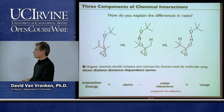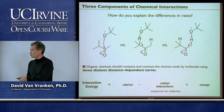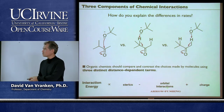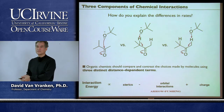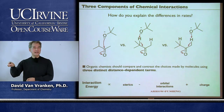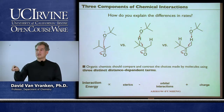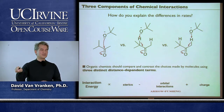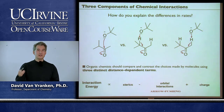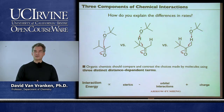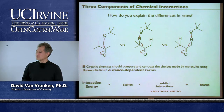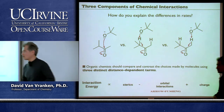Orbital interactions are really a representation of arrow pushing. If we break down our reaction mechanisms into individual elementary reaction steps—where each step has a single transition state—then we can equate arrow pushing with the interaction of filled orbitals with unfilled orbitals. And that's very powerful.